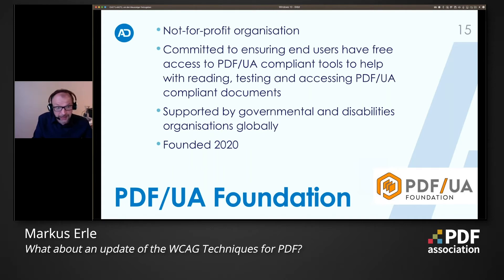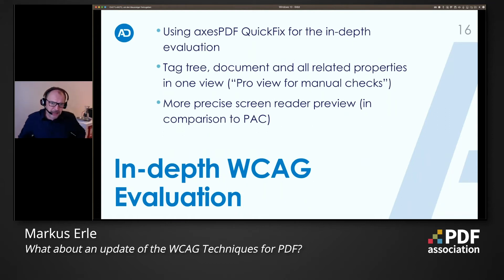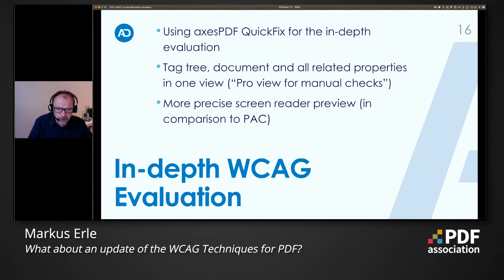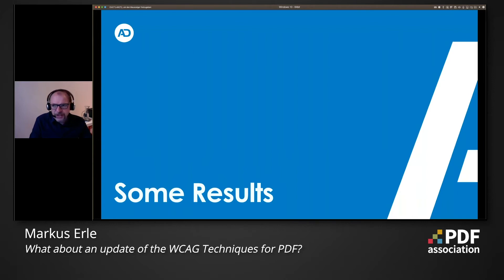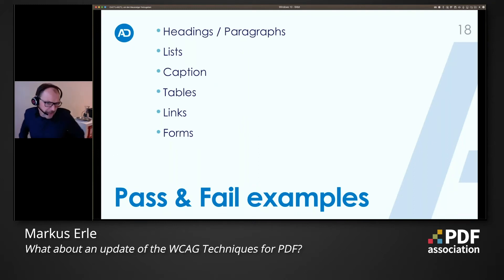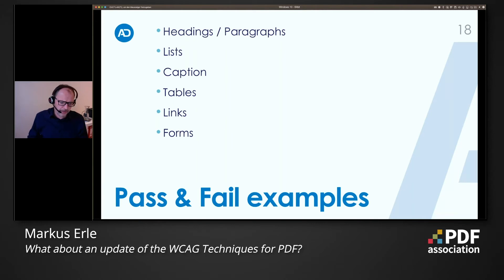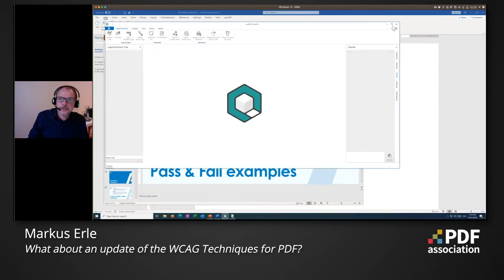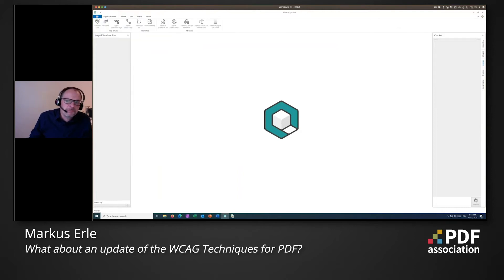In the meantime, we have used Access PDF Quick Fix for in-depth evaluation because it's a tool where you have in one view the tag tree, the document view, and all related properties — we call it the pro view — for manual checks. It has a more precise screen reader preview in comparison to PAC. Let's jump right into some results. I have collected some of the files; they are not published so far, so these are appetizers.